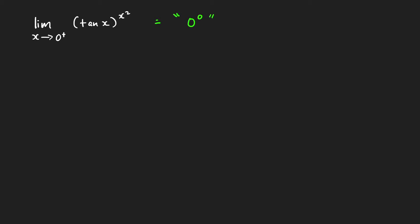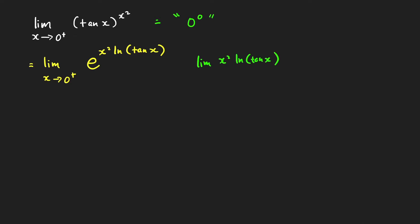We write this limit in the form of an exponential function: e raised to x squared times ln of the base, tangent x. Next, we find the limit of the power — so we find the limit of x squared times ln of tangent x as x approaches 0 from the right.